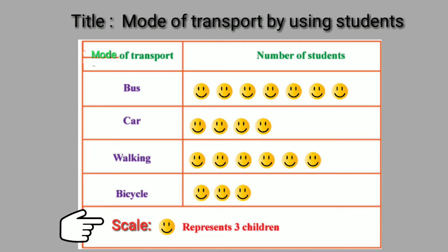Let's see students how we can read these pictographs. What is the title? Mode of transport used by students. The title tells us the pictograph is about the number of students and which type of mode of transport they use. The label gives us information of how many students used different types of transport, and the scale tells us each student picture is equal to three children.